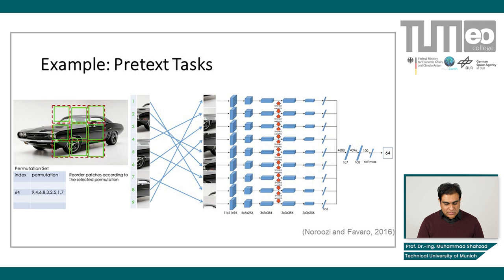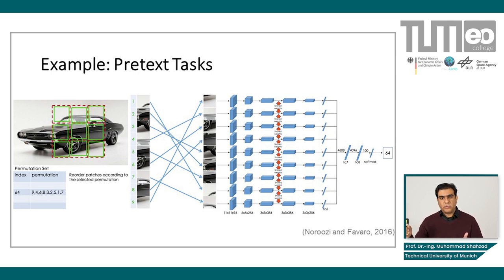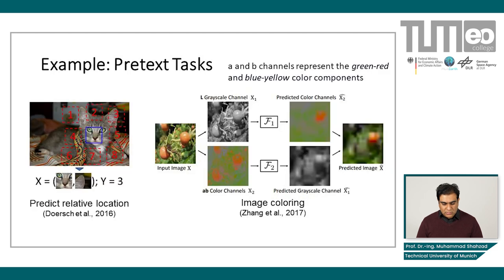You could actually put these image patches in random order, in a random permutation, and assign that permutation an index. Basically, you only feed these image patches in different permutations to the network, but the network is trained to predict which particular index of the permutation it is, as shown in this figure. This is a particular pretext task which has been quite useful in the literature.